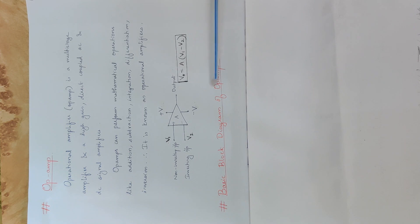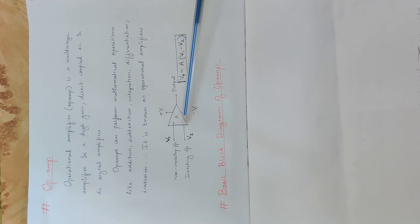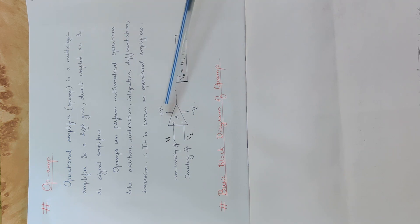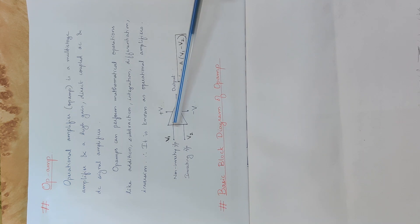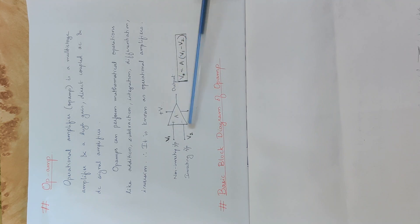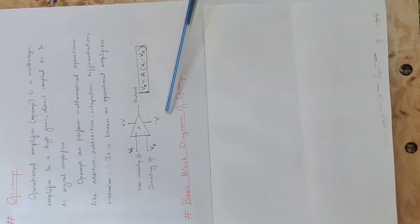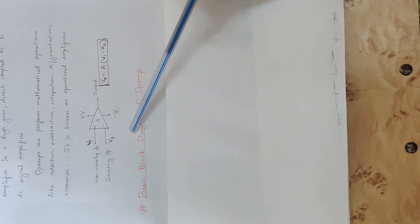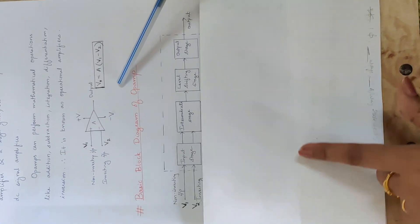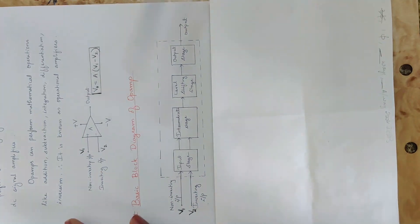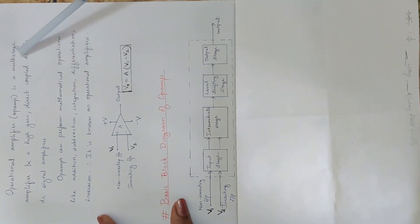Next is the Basic Block Diagram of Op Amp. This Op Amp represents a triangle symbol. Op Amp is called a Multi Stage Amplifier. These are the stages of Op Amp. We will now look at the Basic Block Diagram of Op Amp.